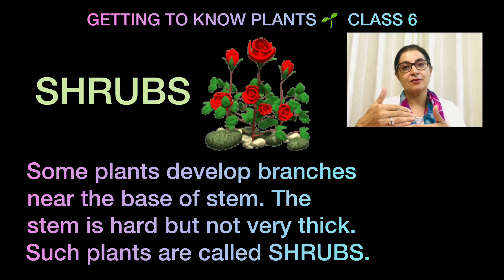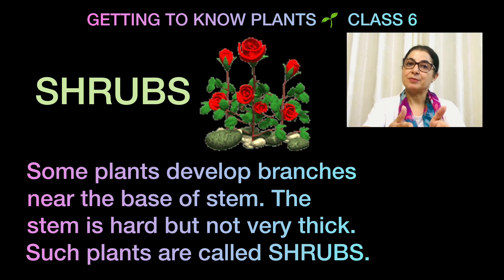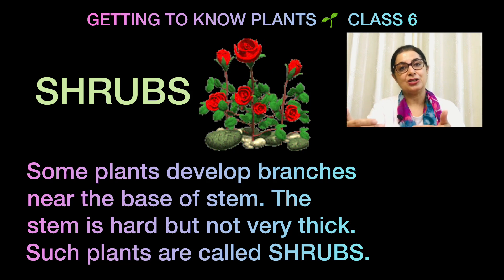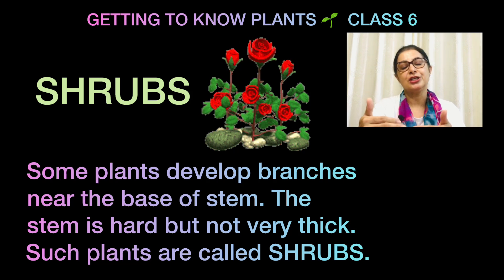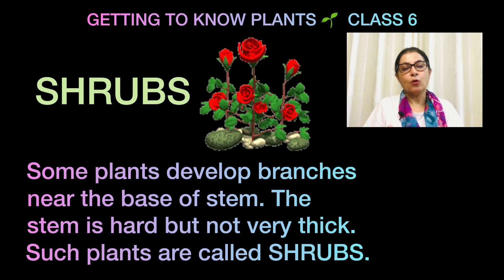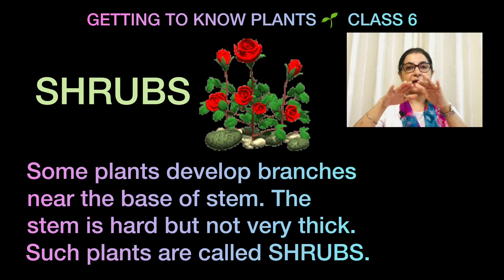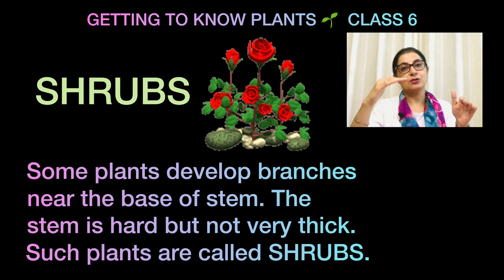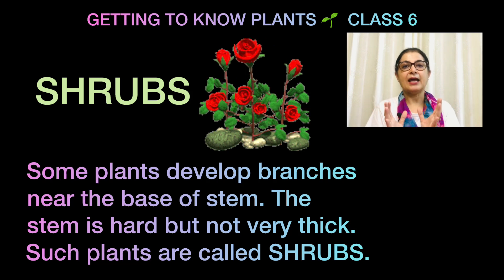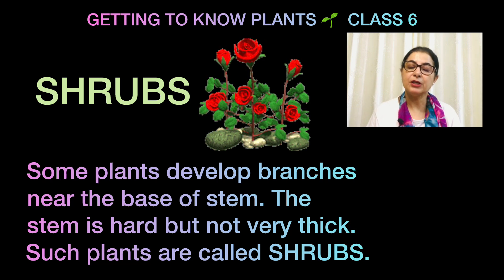Now coming to the next category — the shrub. Shrubs are medium height plants, for example rose. As I told you in the introduction video, shrubs are bushy in nature — you can hear the sound 'sh' in both 'shrub' and 'bushy'. They have many stems all coming together from the ground, forming a medium-sized bushy plant — usko hum bolte hain shrubs.